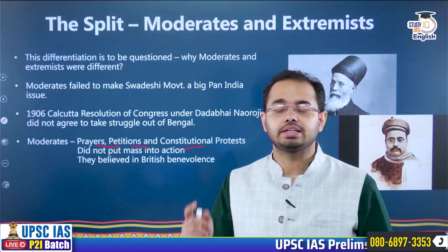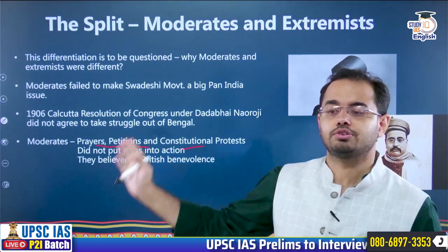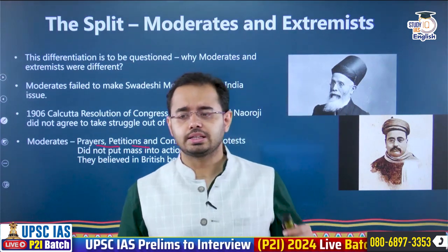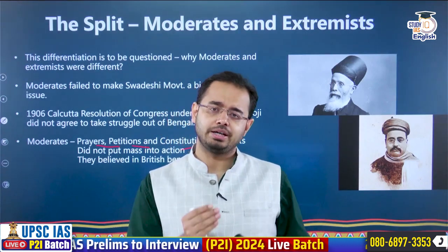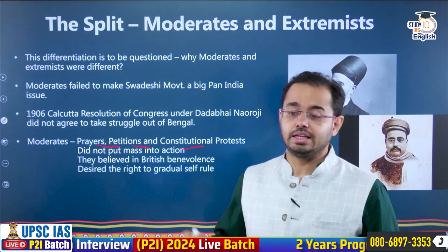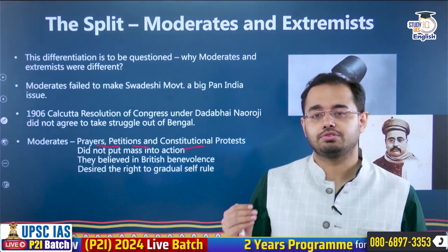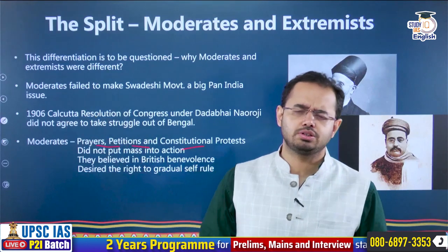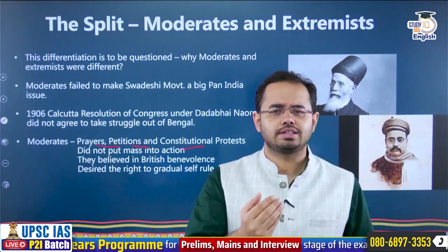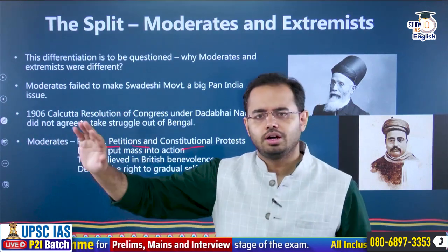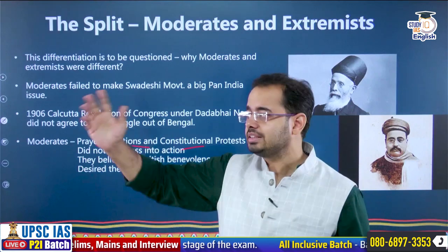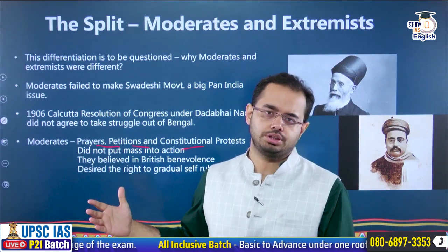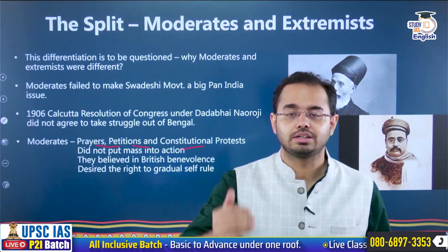Moderates genuinely thought that Britishers would give them constitutional liberties if they did not make life tough for them. They said we shall take the issue of partition in a simple way — write petitions to the governors — and not follow mass action, mass agitation, or boycott, which we saw in the Swadeshi movement. That is why moderates were surprisingly away from the Swadeshi movement. You will not hear the name of Dada Bhai Naroji or Gopal Krishna Gokhale participating actively in it. They desired the right to gradual self-rule — today the right to discuss, tomorrow the right to vote, then dominion rights, and after years, the right to self-rule. A gradual progression — they didn't want Britishers to go right away at that point of time.